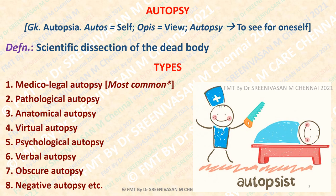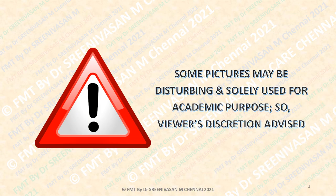The first and most important one is the medical-legal autopsy. Students, please remember that medical-legal autopsy is the most common type of autopsy in India. Then there is pathological autopsy, anatomical autopsy, etc. In virtual, psychological, and verbal autopsies, actually no dissection is carried out. Then there are obscure and negative autopsies also. Before discussing these different types, I would like to caution that some pictures and slides may be disturbing for some viewers.